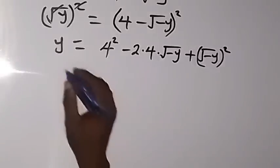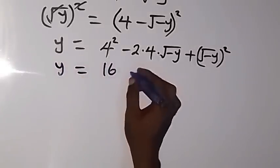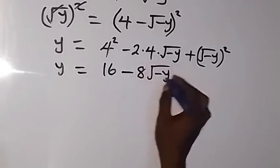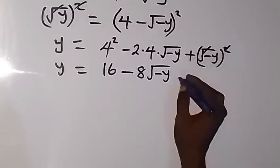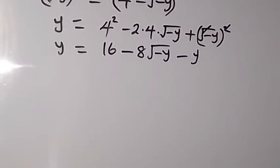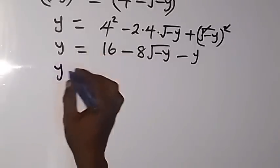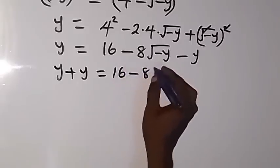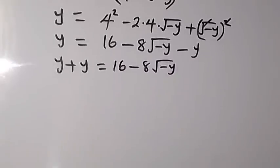When we rewrite this we have: y equals to 16 minus 2 times 4, that's 8, then times root minus y, plus root minus y squared — and square cancels square root, so that becomes minus y. We can take that minus y to the left side: y plus y equals to 16 minus 8 root minus y.